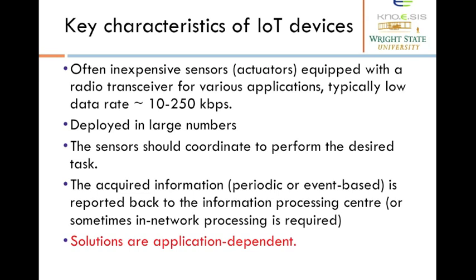Here are the key characteristics of the Internet of Things. The nodes consist of sensors that are typically low cost and also have low bandwidth. Sensors are usually deployed in large numbers and they have to perform coordination to accomplish a certain task. The data gathered from sensors should be reported to a centralized station or it might also require local processing. Solutions in Internet of Things are very much application dependent.